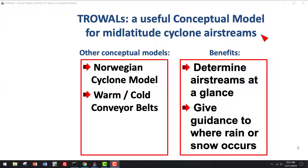Trowels are a useful conceptual model, joining other useful conceptual models you might have for extratropical cyclones, such as the Norwegian cyclone model or warm and cold conveyor belts. Like those two others, trowels are useful because they help you identify or determine what the airstreams are in a cyclone at a glance, and that helps you give guidance to where rain and snow might be occurring.